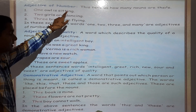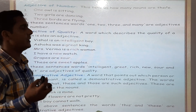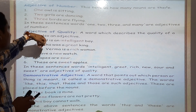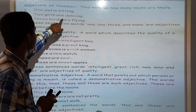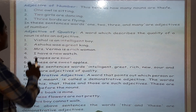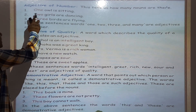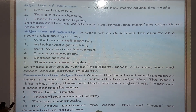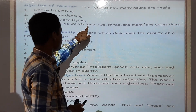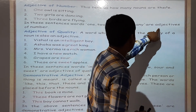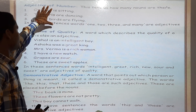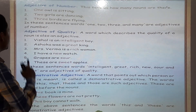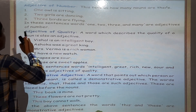Second mein — two girls are dancing. Yaani girls jo hain jo dance kar rahi hain, unki sankhya ko bata raha hai. So hamaara two kya hai? Adjective of Number. Next — three birds are flying. Yahan bhi birds ki sankhya ko bata raha hai, isliye three hamaara Adjective of Number hai. In these sentences, words one, two, three and many are adjectives of number. In sentence mein jo diya gaya hai one, two, three — yoh sab kya hain? Adjective of Number hain, kyonki nouns ki sankhya ka pata chalta hai.